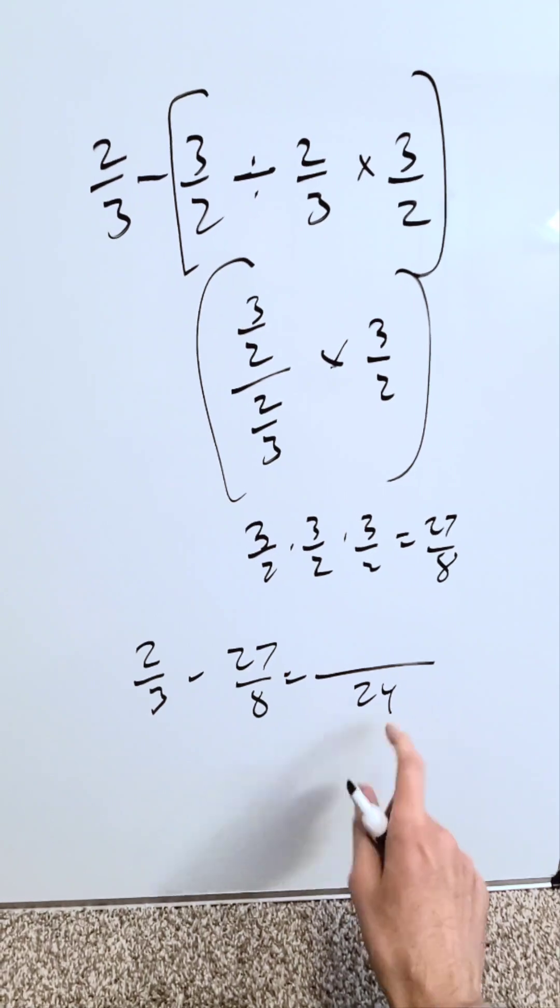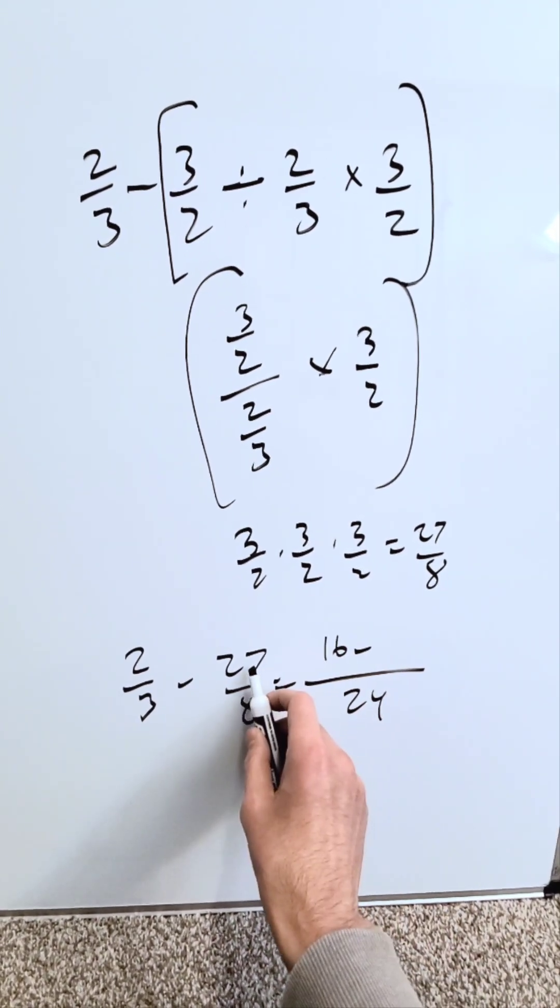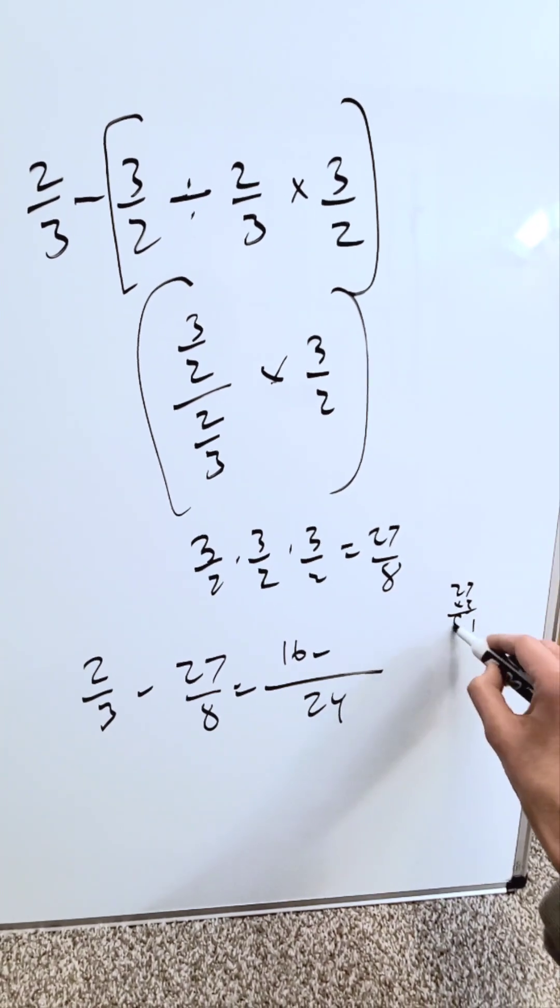3 times 8 is 24. 8 times 2 is 16. Minus 8 goes into 24 three times. What's that going to be here? What's 27 times 3? I'll have a 1 and a 2. 81.